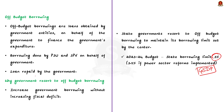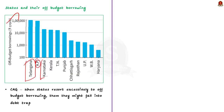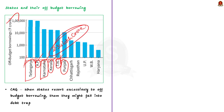Now let us see the data mentioned in the article. This graph shows the off-budget borrowing of states as of March 2021. From this graph we can clearly see that it is the southern states who have used this mode of borrowing the most. According to the CAG report, five southern states — Telangana, Andhra Pradesh, Kerala, Tamil Nadu, and Karnataka — accounted for 2.34 lakh crore rupees, that is around 93% of the total off-budget liabilities of 11 major states analyzed.